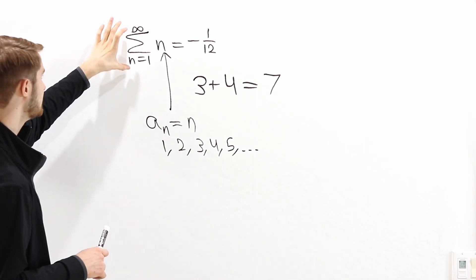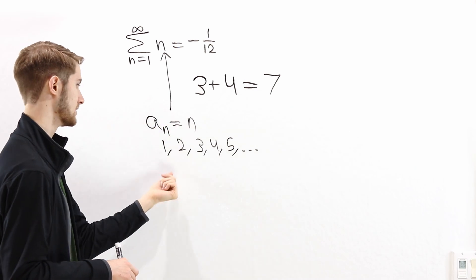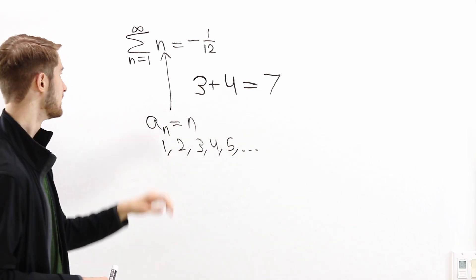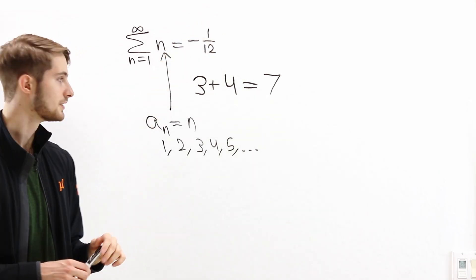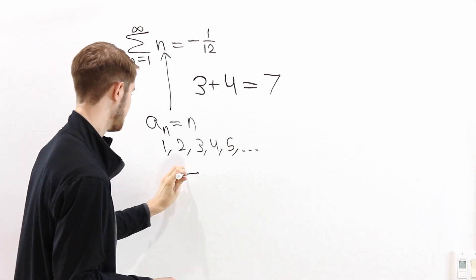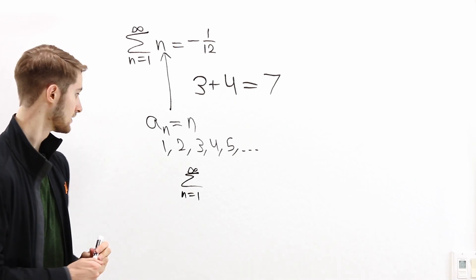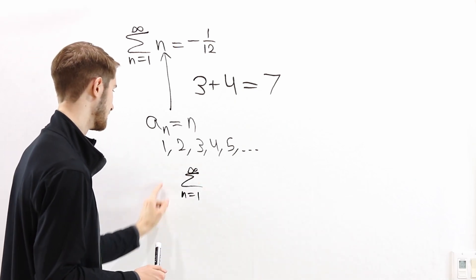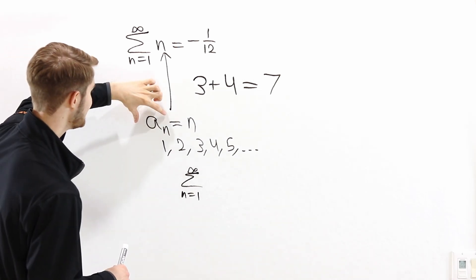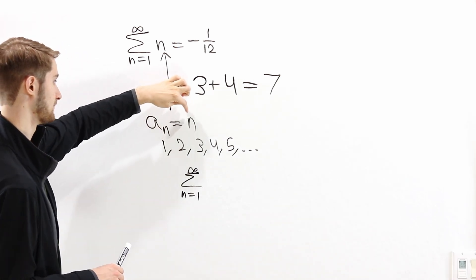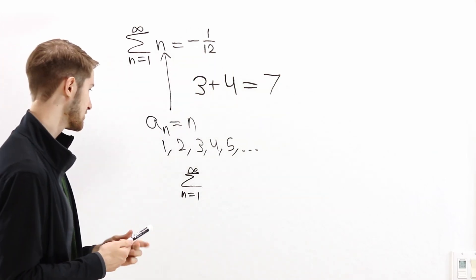When we take the infinite sum of all natural numbers, we're taking this sequence 1, 2, 3, 4, 5, and so on, and somehow producing a number from that sequence. So we can think about the infinite sum — the sum from n equals 1 to infinity — as a function. This sum operator is a function that takes in a sequence of numbers and outputs some other number as a result.